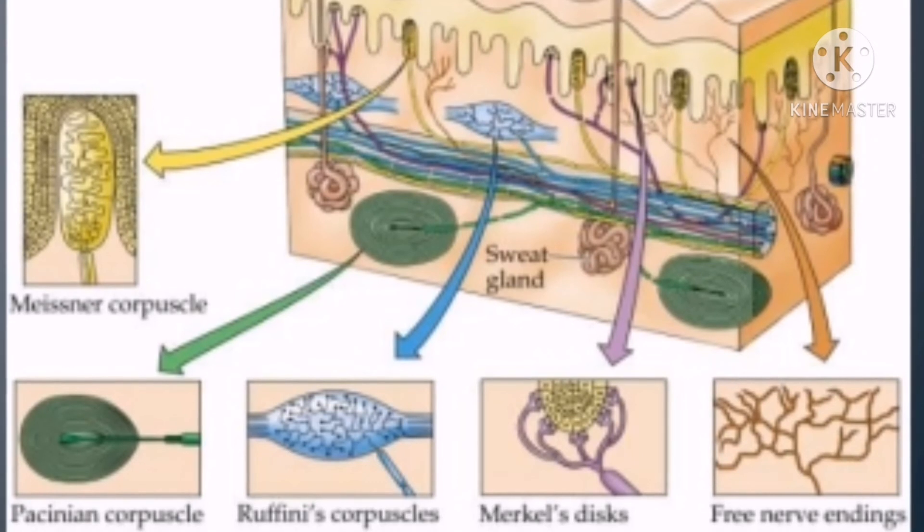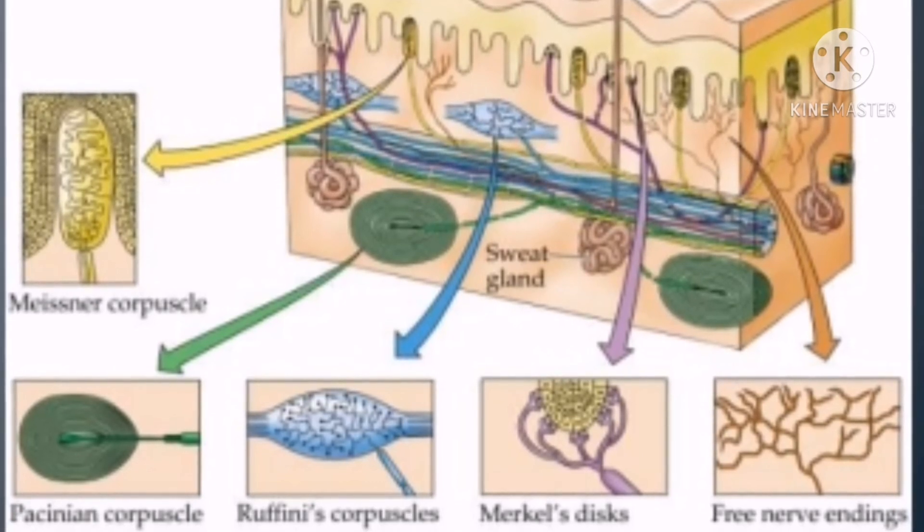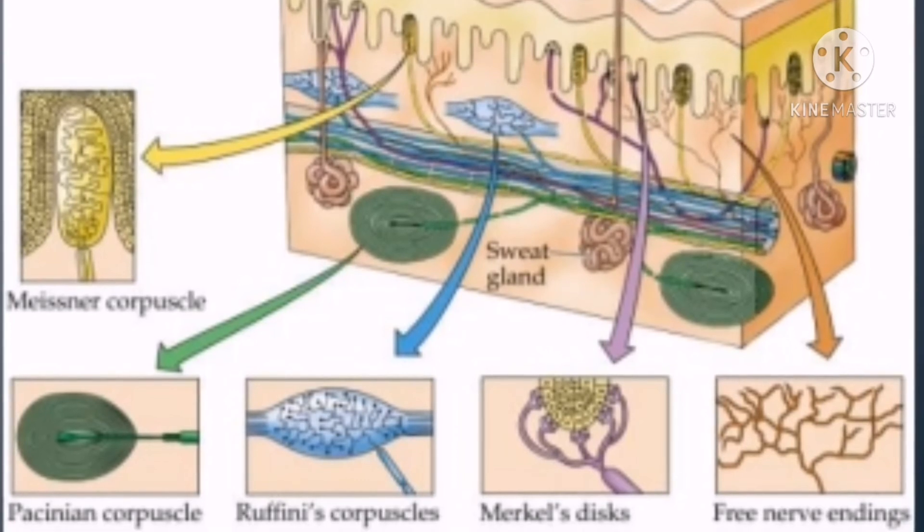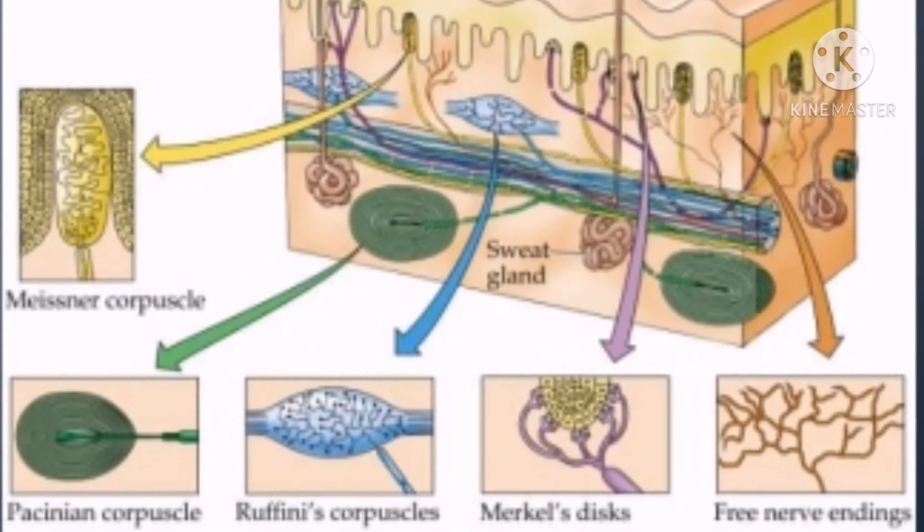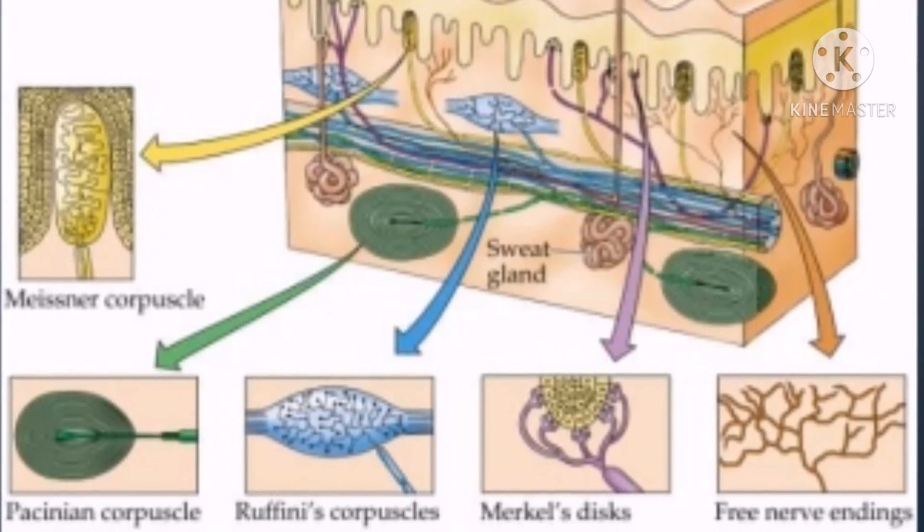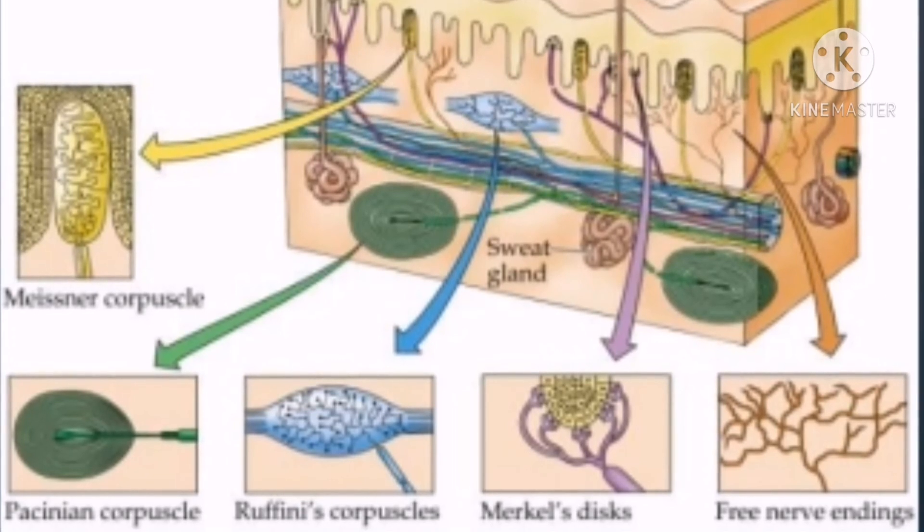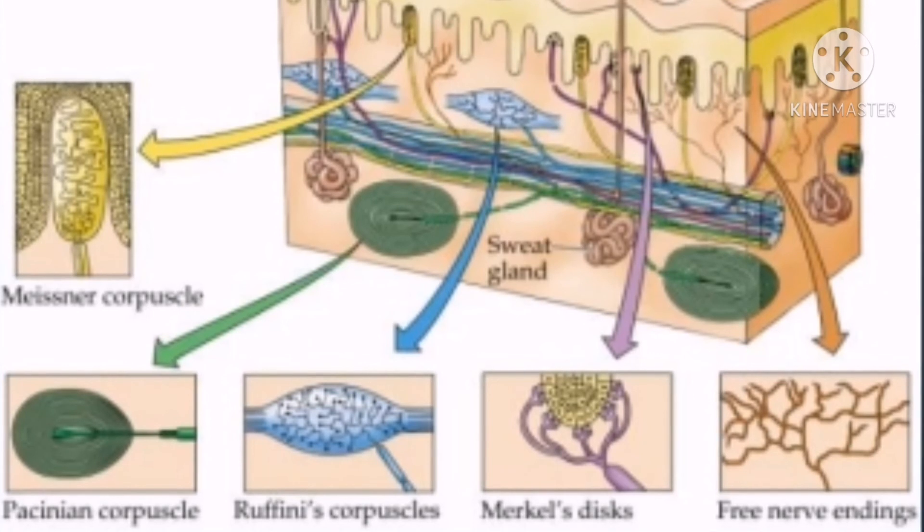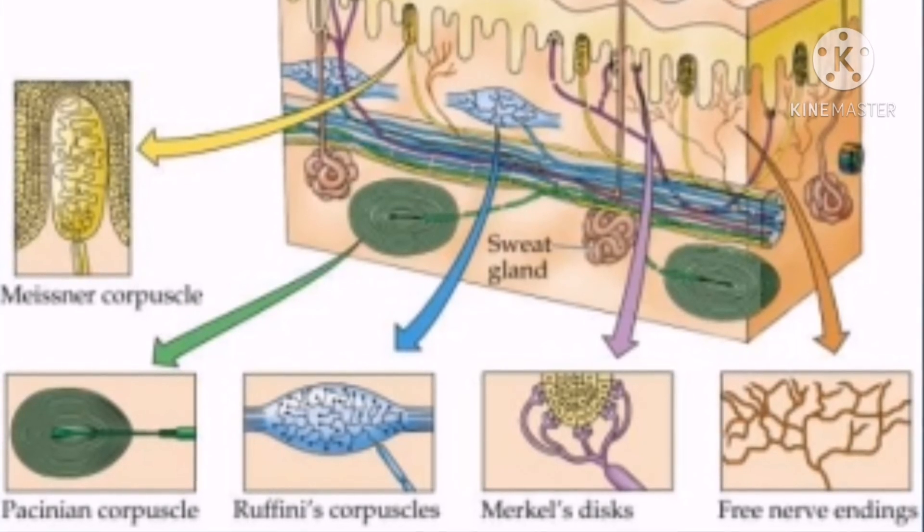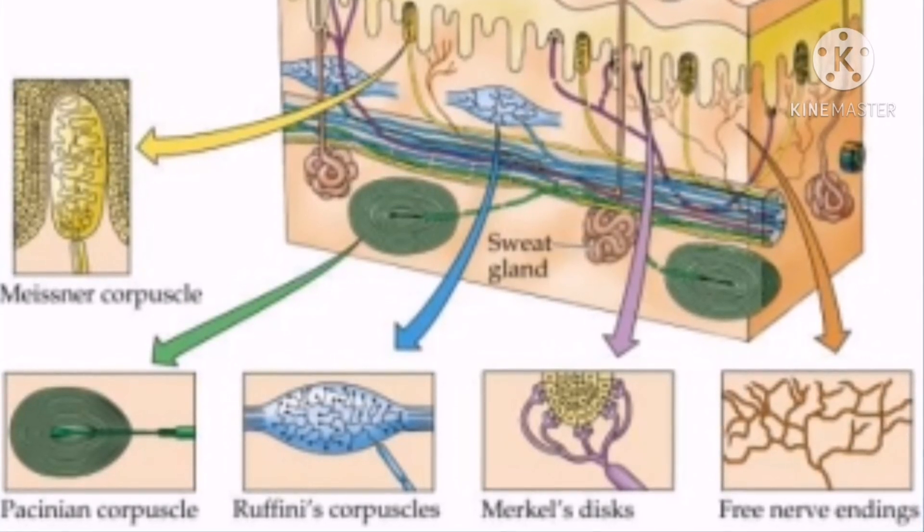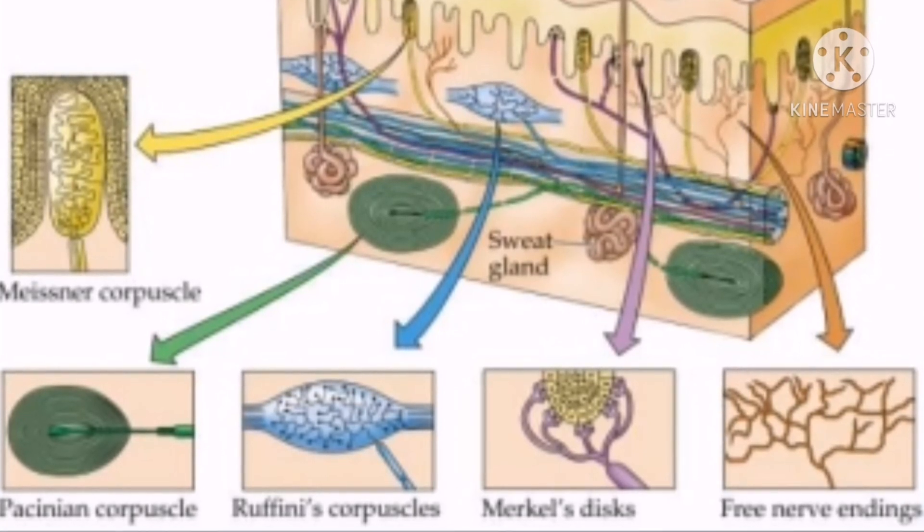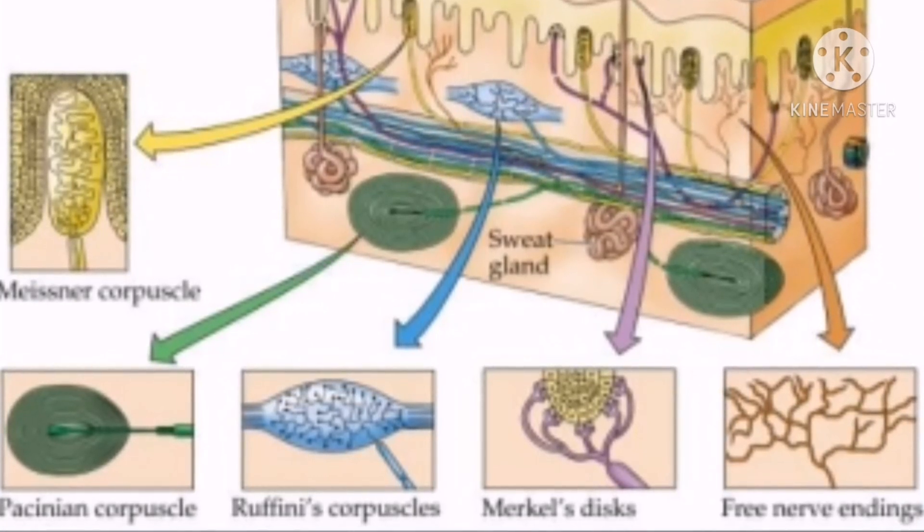So how does our sense of touch work? Cells which are receptors in the skin are stimulated. For example, it is cold. Receptors surrounding the nerves in the skin are stimulated, and the stimulus is converted to an impulse and is sent to the brain. The brain then interprets the impulse and identifies what is felt.